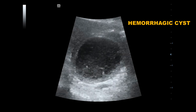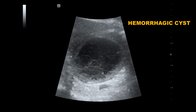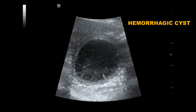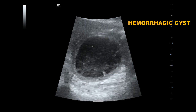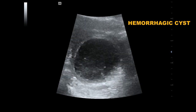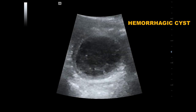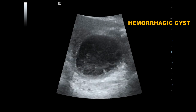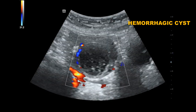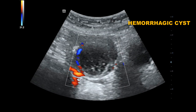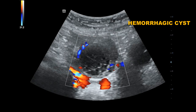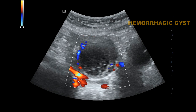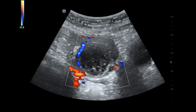This is a hemorrhagic cyst. Sometimes hemorrhage may occur in functional cysts. Here the internal pattern becomes reticular type, containing internal echoes and interdigitating septations. Color Doppler shows a peripheral ring of vascularity, but there is no vascularity within the cyst.